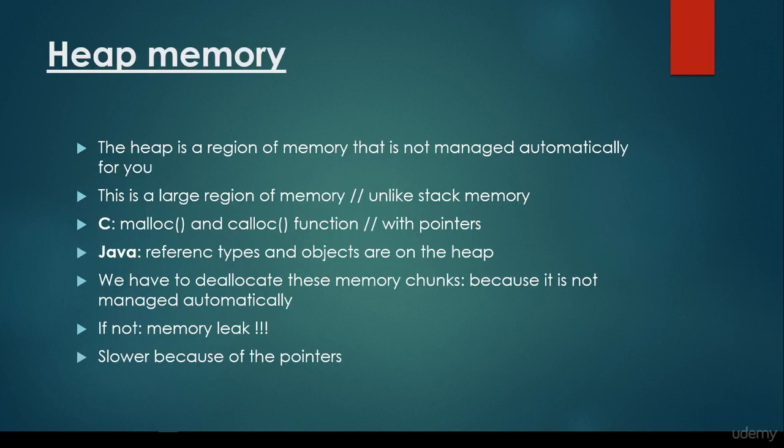What about heap memory? The heap is a region of memory that is not managed automatically for you. It is in the Random Access Memory as well. It's very important that this is a large region of memory, unlike stack memory, because the size of stack memory is very small. In C, for example, we have to use the malloc and calloc functions with the help of pointers to be able to allocate some space on the heap memory.